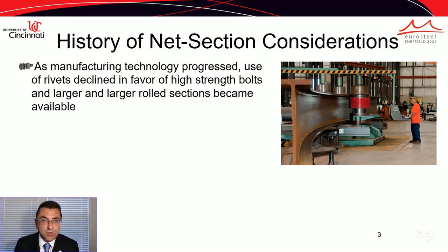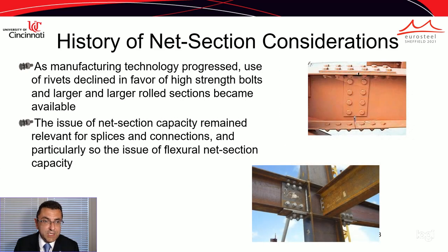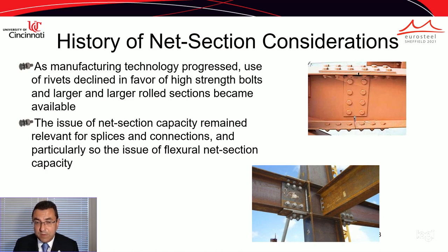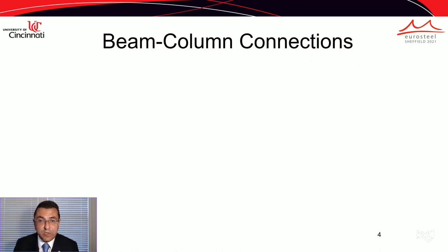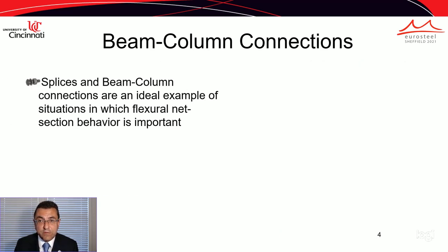As manufacturing technology progressed, the use of rivets declined in favor of high strength bolts and the industry was able to roll larger and larger sections. The issue of net section capacity, however, remained relevant — especially in the case of splices and beam-column connections — where flexural net section capacity is the chief consideration.